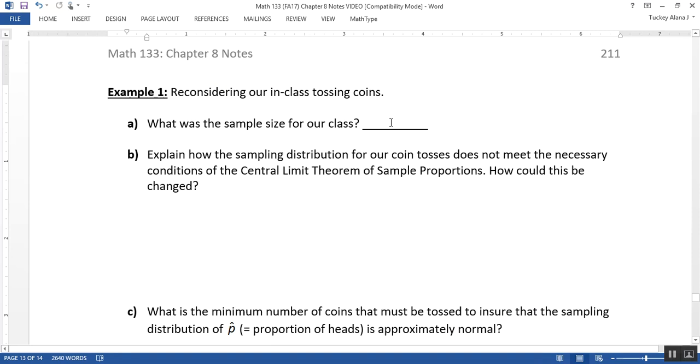Alright, so the sample size for our class was 28. Now keep in mind, that's not the same thing as the sample size for you. As an individual, you toss the coin five times, and you get your proportion. But as a group, when we collect them all together, we did n separate p-hats, if you will, n separate toss experiments.